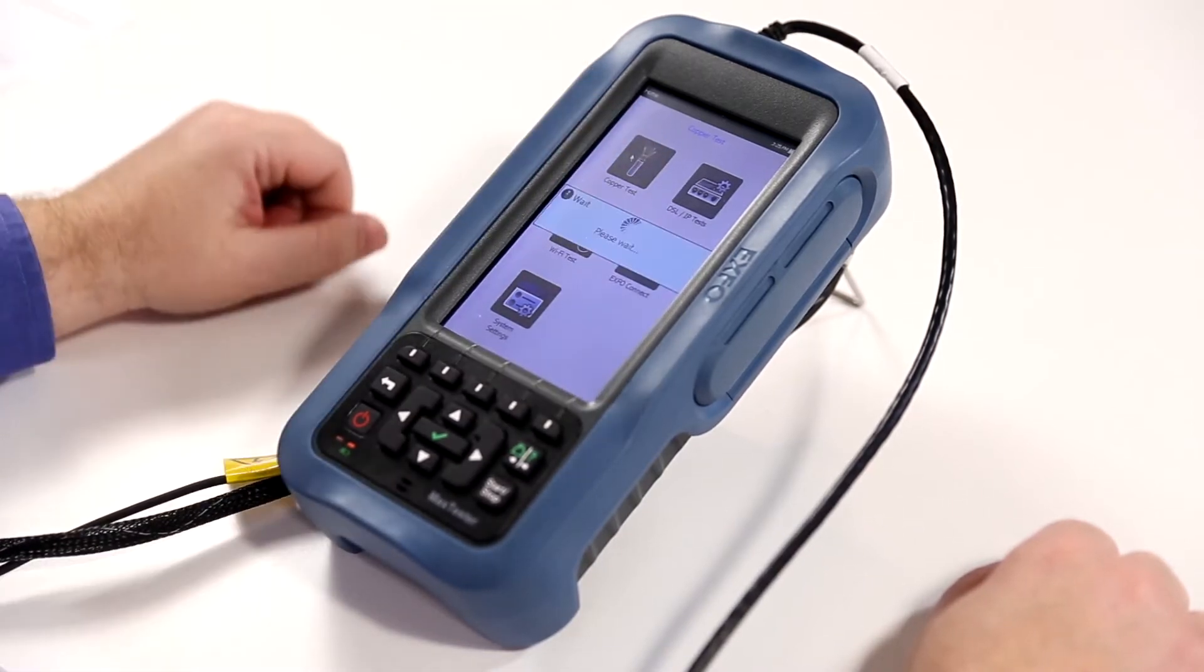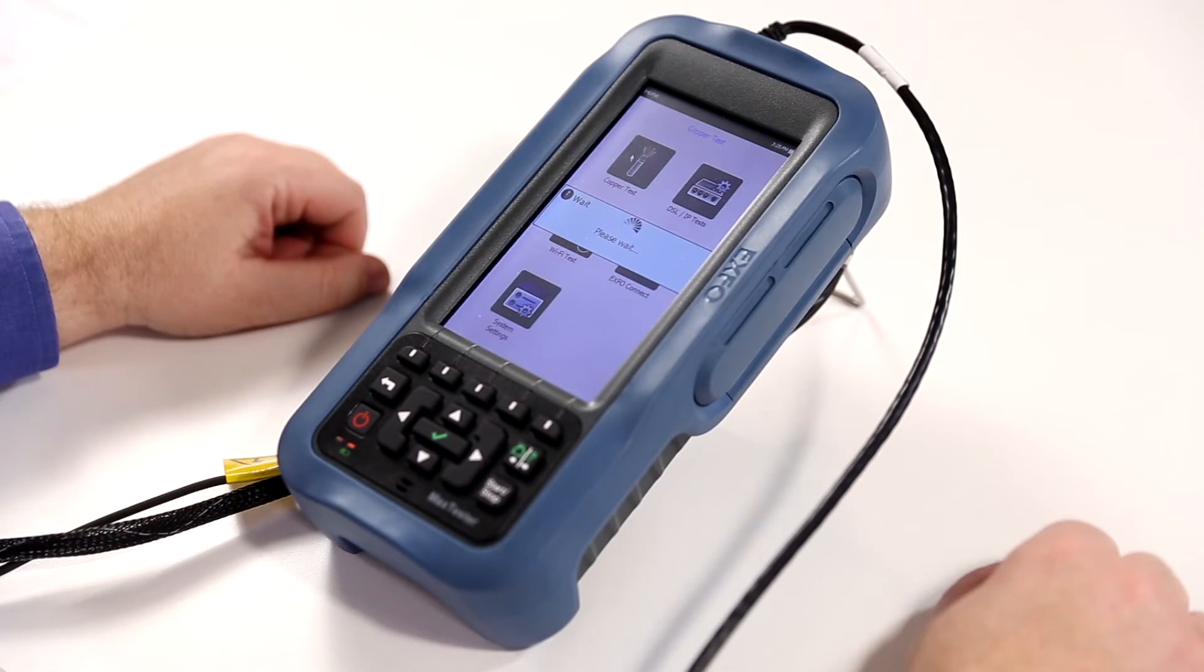By selecting the copper test icon on the home menu of the Mac 635G, either by tapping the screen or using the keypad, you will have access into the copper test suite.